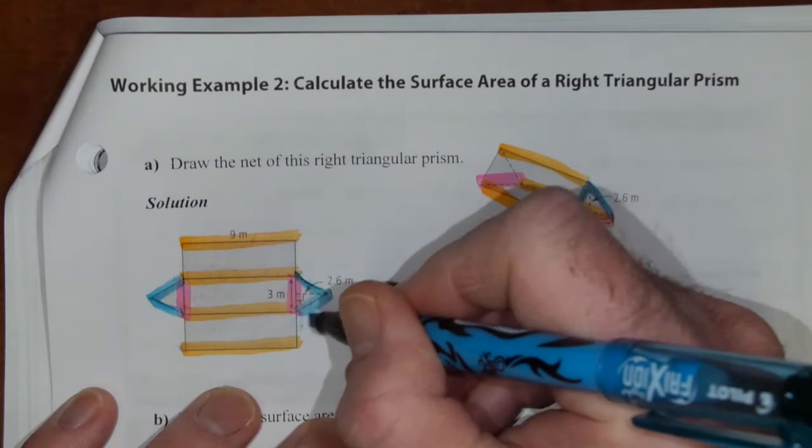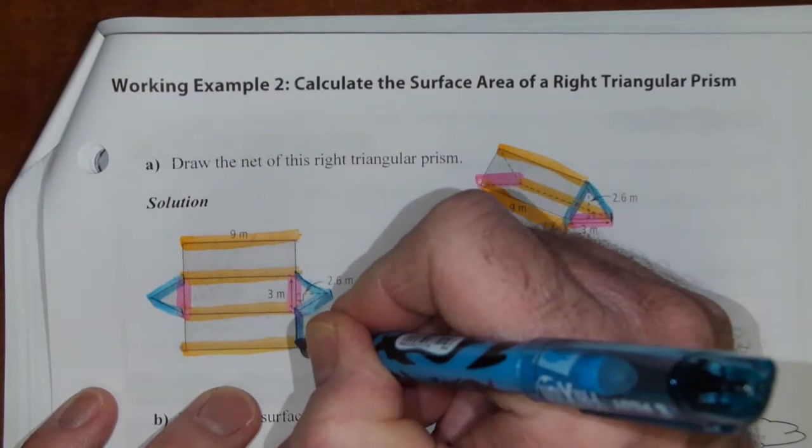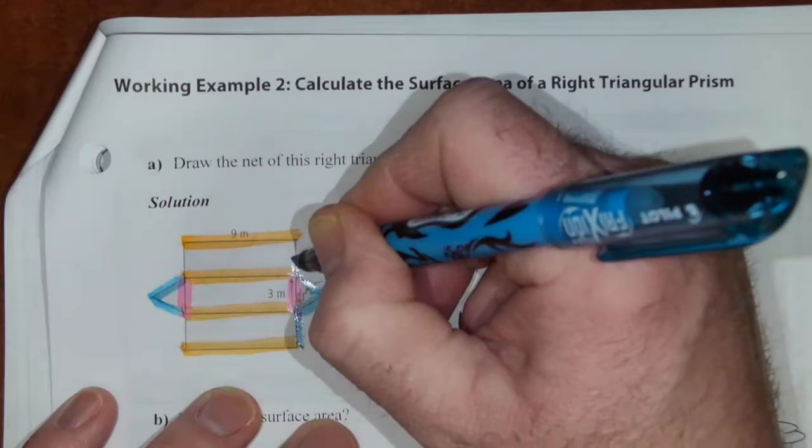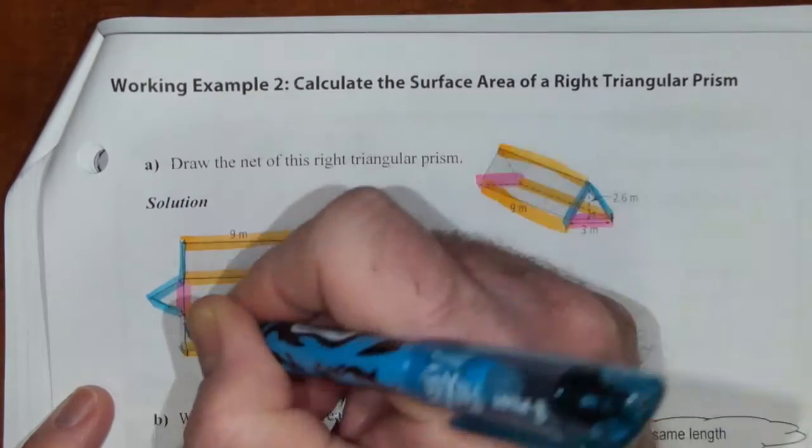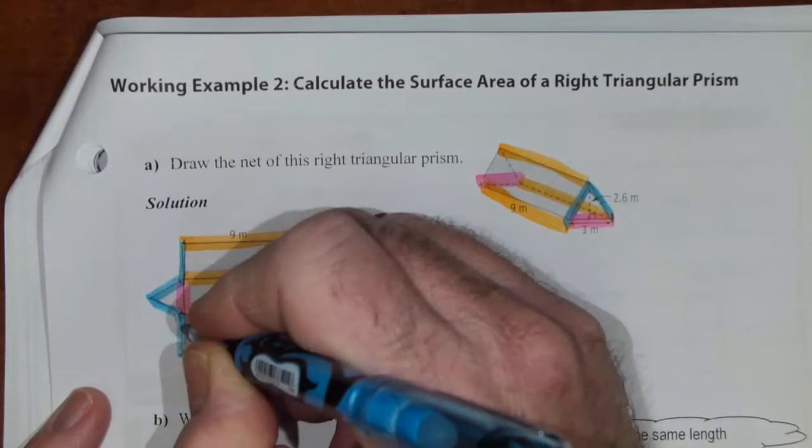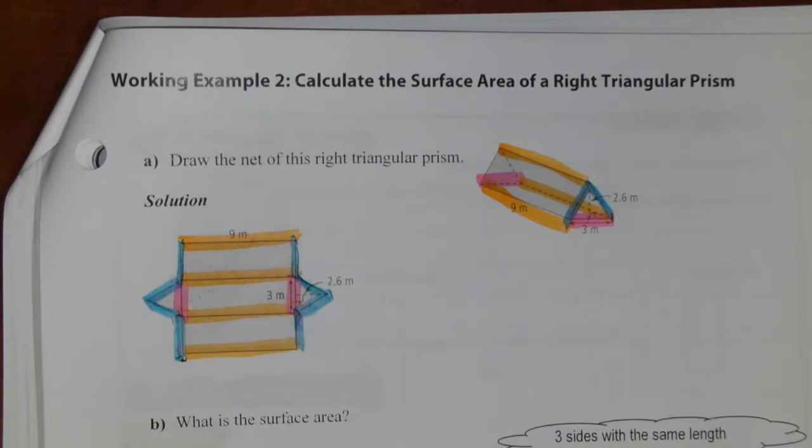Now, when this gets folded together, this blue line connects up with that blue line. This one connects up here. So that one and this one connect, and then that one and that one connect up. So that's how it goes together and what the different lengths are.